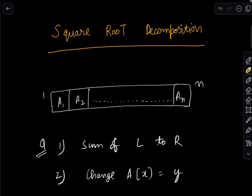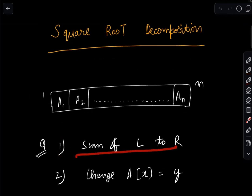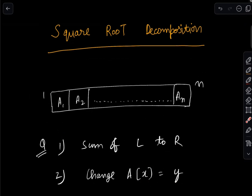We have one array with elements named a1, a2, till an, and we will be given a list of queries. There will be two types of queries. Query 1: what is the sum of elements from l to r, which is the subarray l to r. Query 2: we want to change the value of the x-th element in the array to y.